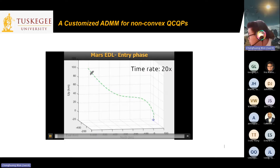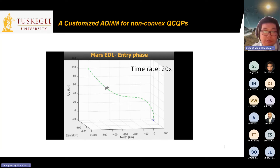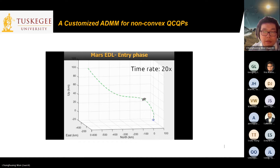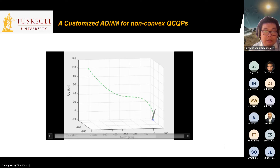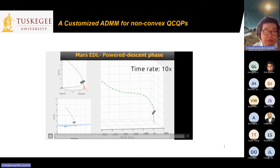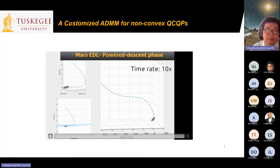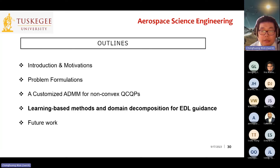Here is the animation for the Mars EDL problem. First is the entry phase — this video is accelerated 12 times. Then it transitions slowly into the powered descent phase; we can see the attitude changing, and the cone shape represents the thrust generated by the vehicle. However, although we can solve this problem effectively with the proposed customized ADMM, it is still far from real-time guidance, as it still takes several seconds or more than 10 seconds to solve the problem.